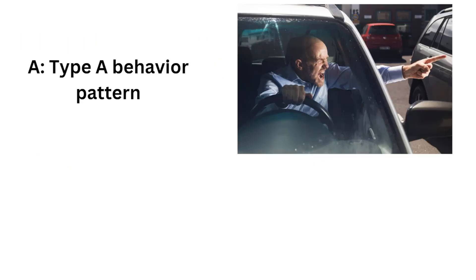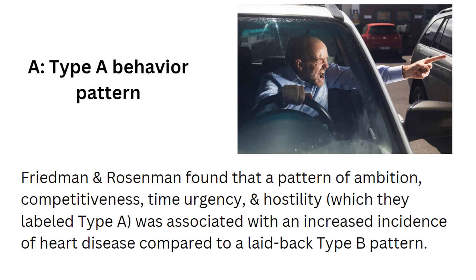And this would be A, Type A behavior pattern. Friedman and Rosenman found that a pattern of ambition, competitiveness, time urgency, and hostility, which they labeled Type A, was associated with an increased incidence of heart disease compared to a laid-back Type B pattern.